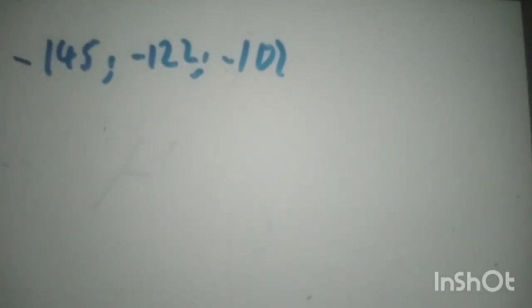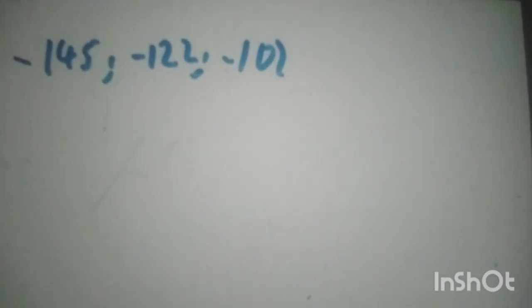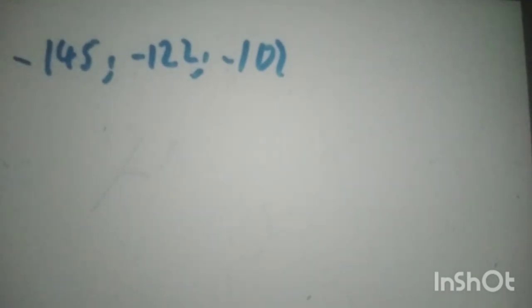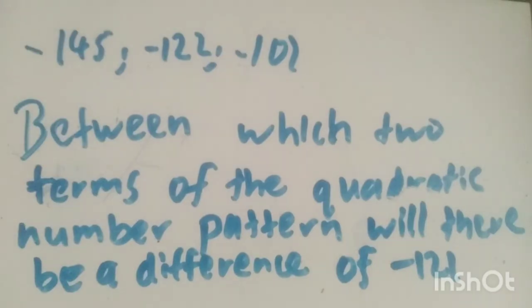The second difference — we don't have to verify if the second difference is the same because we're already told. They ask you: between which two terms of the quadratic number sequence will the first difference be negative 121? So between which two terms of the quadratic number pattern will there be a difference of negative 121?